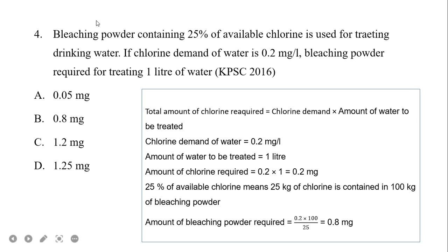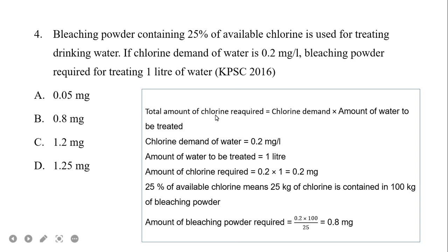Next question: bleaching powder containing 25% of available chlorine is used for treating drinking water. If the chlorine demand of water is 0.2 mg/L, what amount of bleaching powder is required for treating 1 liter of water? We have 25% chlorine in the bleaching powder and chlorine demand is 0.2 mg/L. Total chlorine required is 0.2 mg/L × 1 L = 0.2 mg.